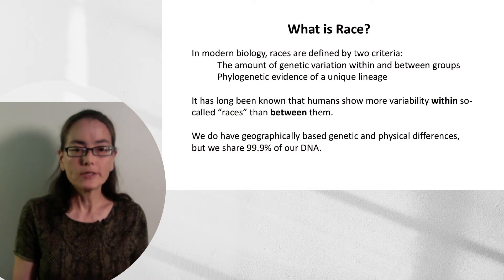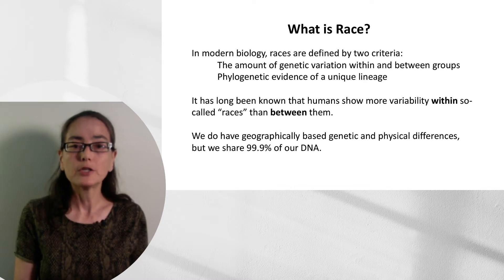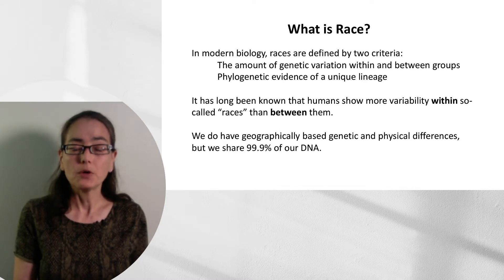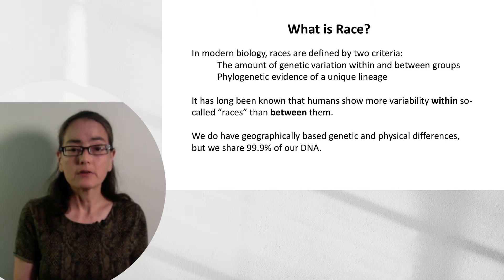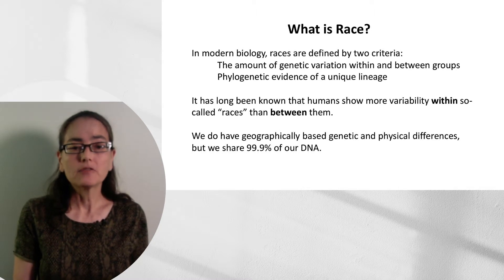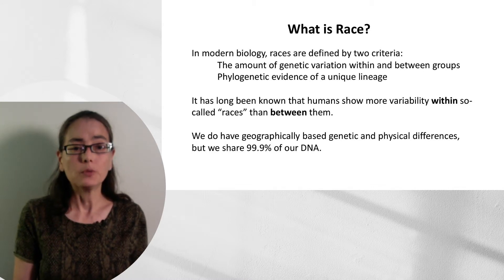When we consider what is race, we have to recognize that in modern biology, races are defined by two criteria: the amount of genetic variation within and the amount of genetic variation between groups, as well as phylogenetic evidence of unique lineage. Neither of these is seen in modern humans.